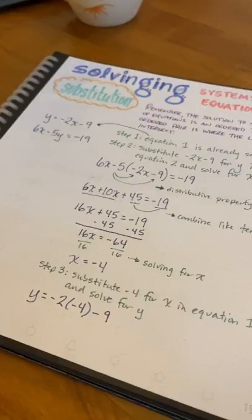The next step, step 3, is we're going to substitute negative 4 for x in equation 1 and then solve for y.